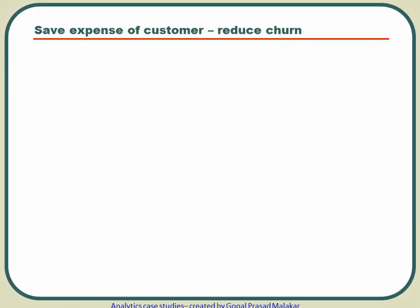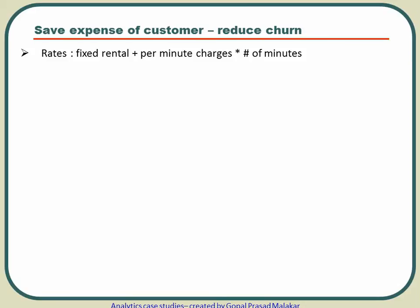Let me explain a case study on how to reduce churn. Churn is a big problem in the telecom industry — people keep shifting from one network provider to another. The root cause of churn is cost, and cost has two components: a fixed component and a variable component.